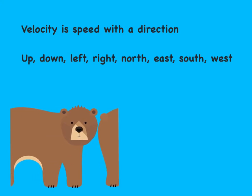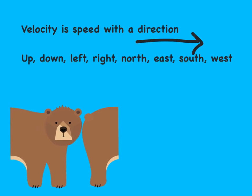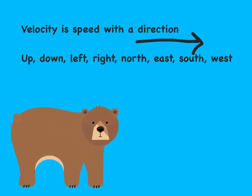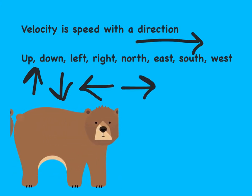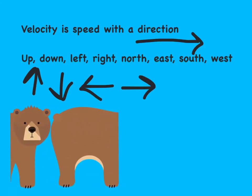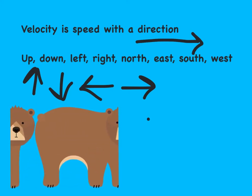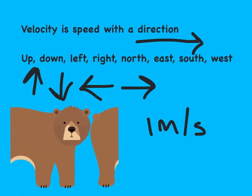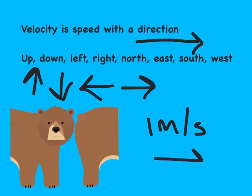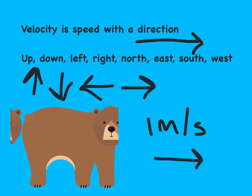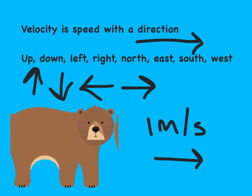Now let's look at velocity. Velocity is just speed, but it also has a direction associated with it. That direction could be up, down, left, right, north, east, south, west, forwards, or backwards. So if this bear is walking at 1 meter per second, that is speed. But if we say the bear is walking at 1 meter per second to the right, that is velocity. So once again, velocity is just speed but with a direction.